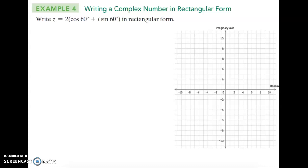This video is example four of lesson six five on writing a complex number in rectangular form. So we're given a complex number that right now is in polar form. We did example three where we had a rectangular form and converted it to polar. Now we're doing the opposite.